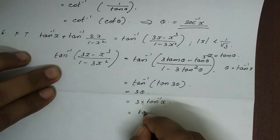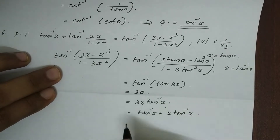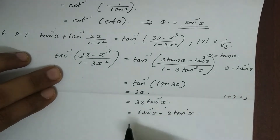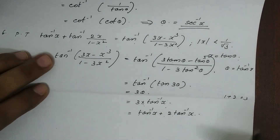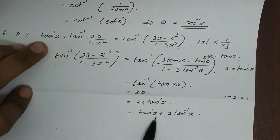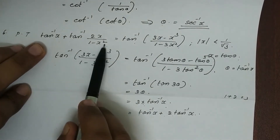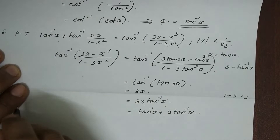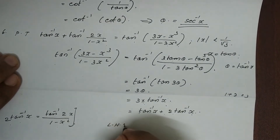We call this 1 plus 2 tan inverse x. So tan inverse 2x divided by 1 minus x squared is equal to 2 tan inverse x. Therefore tan inverse x plus tan inverse 2x divided by 1 minus x squared gives us tan inverse x plus 2 tan inverse x, so LHS equals RHS.